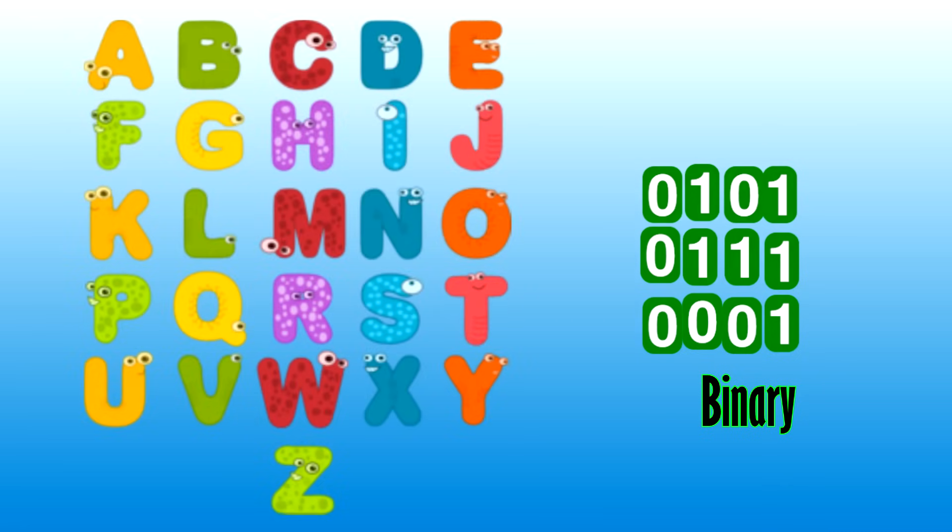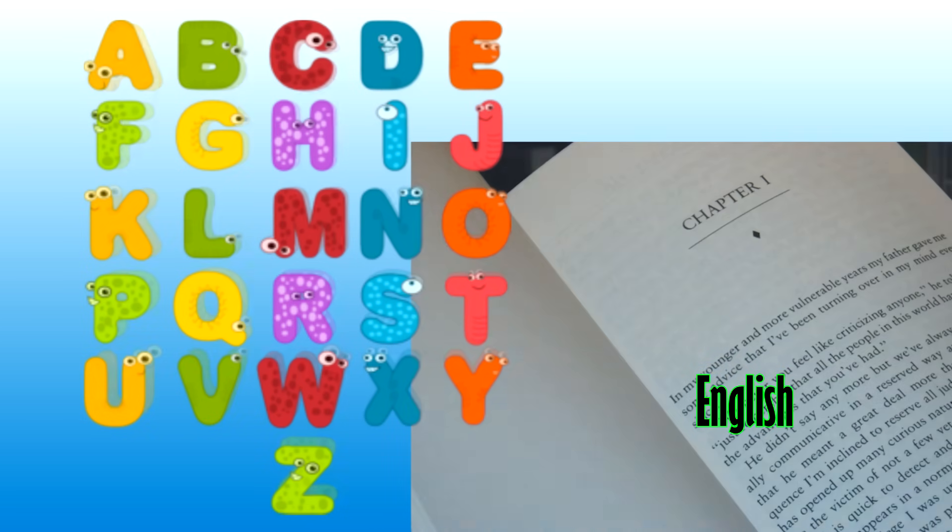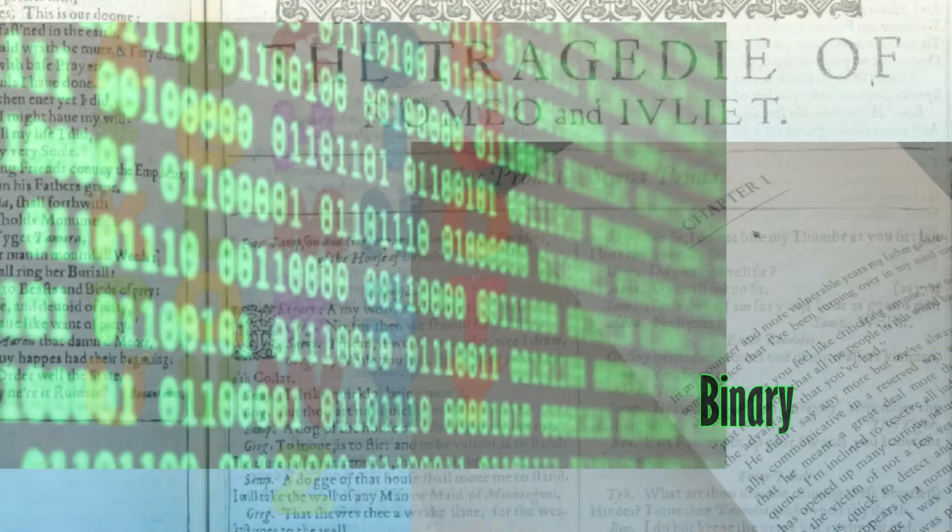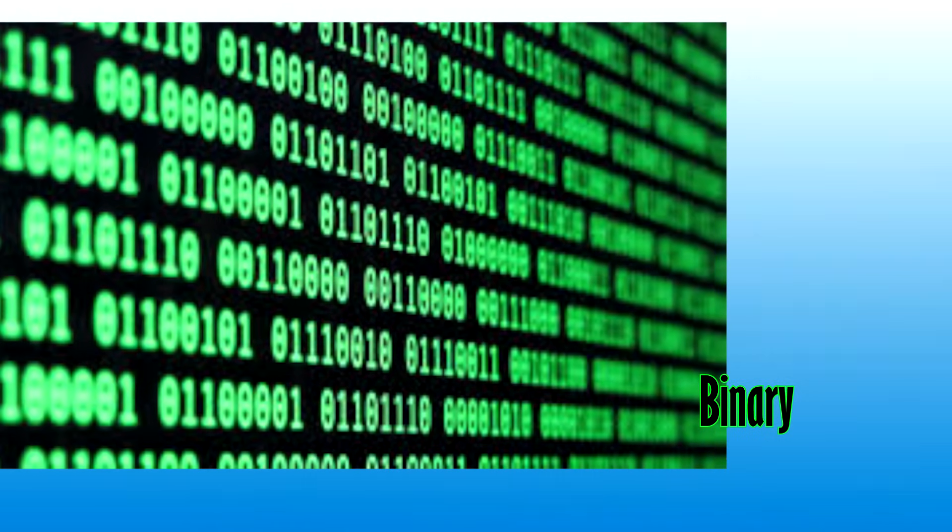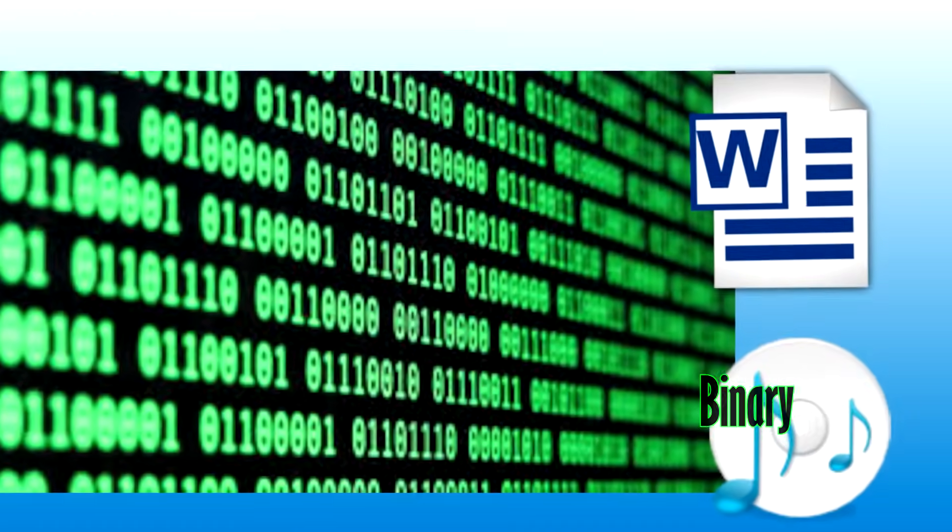Think of 1 and 0 as the alphabet of a computer. If you look at the alphabet of the English language, there's only 26 letters, and by themselves, they're meaningless. But when you combine them into different ways, you get the Great Gatsby, or Romeo and Juliet. In the same way, billions of different combinations of 1s and 0s have the potential to give us Microsoft Word or iTunes.